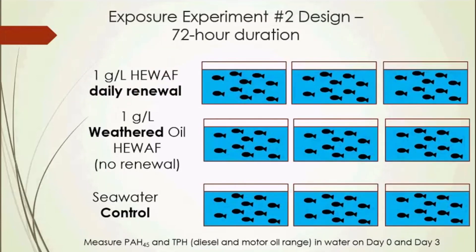The experimental design for our 72-hour duration exposure: the first treatment was one gram per liter HEWAF with daily renewal, three replicate tanks, 10 fish per tank. The second treatment was weathered oil HEWAF with no daily renewal — three replicate tanks, 10 fish per tank — addressing whether we really need fresh HEWAF daily. We again ran a seawater control and performed the same chemistry measurements: PAH45 and diesel and motor oil range TPH at the start and finish to characterize exposure media.